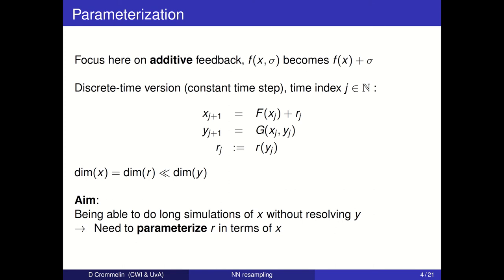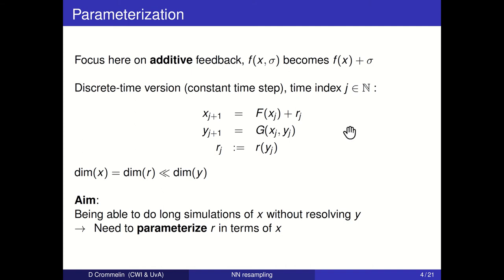Back to the more abstract setting: I'm going to focus on the case where the feedback sigma has an additive form. The ODE for the x degrees of freedom has this form, so sigma is added to essentially an autonomous system for x only. Moreover, I'm going to focus on the discrete-time version obtained from a numerical time integration method, assuming a constant time step, giving a system where j is the time index.